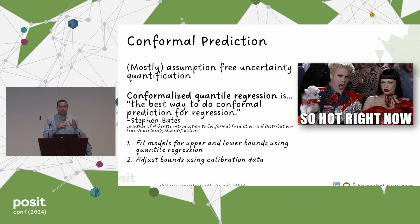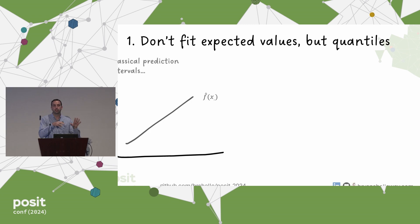The two main steps of this procedure is essentially to first fit lower and upper bounds, and then to adjust those bounds using calibration data. To talk through this in a little bit more detail, I'm first just going to talk about the more traditional approach for producing prediction intervals using the simple linear regression method I was talking about before.